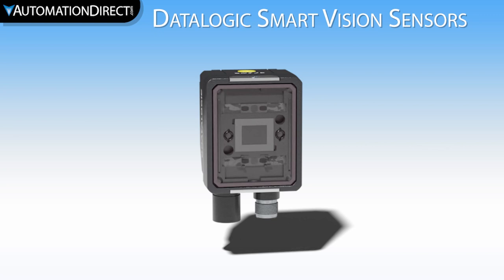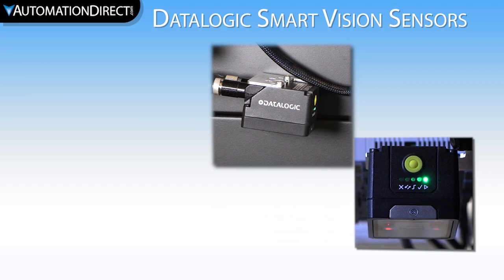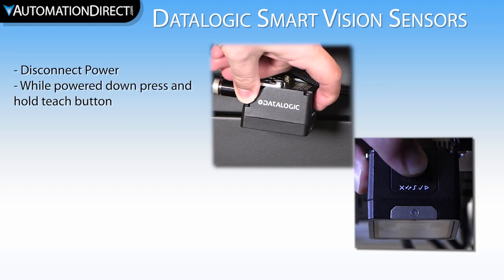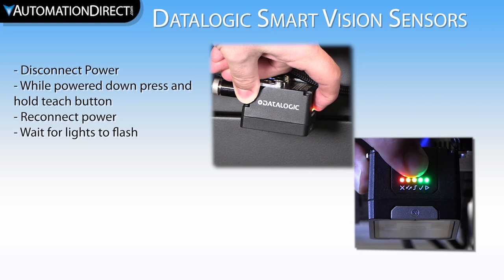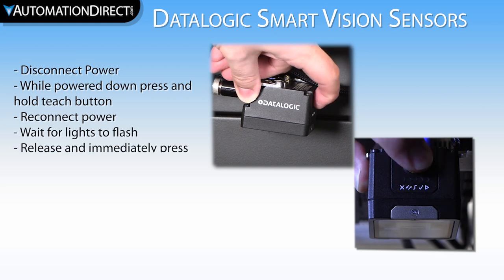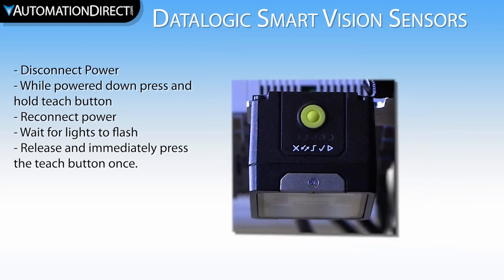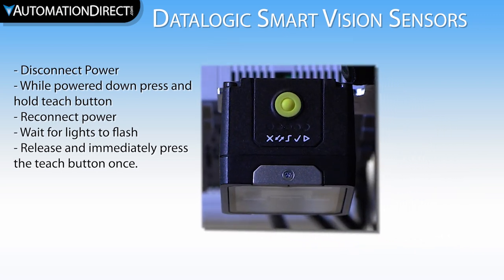Let's return the Vision sensor to factory default settings so that we are starting from a neutral point. To do this, I will turn off the circuit breaker supplying power to the camera. With the camera powered down, I will then press and hold the yellow Teach button and turn the breaker back on. Upon power-up, the LEDs will start flashing. I will then release the Teach button and immediately press it again once. That beep denotes the sensor has been reset to factory defaults. We know that the Vision sensor is in a neutral state ready to be taught because the first LED flashes steadily.